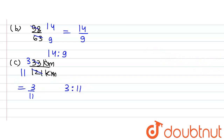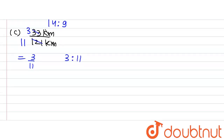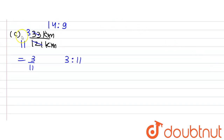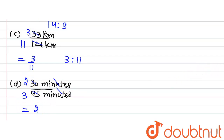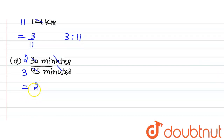Now let's move to Part D. Part D says 30 minutes to 45 minutes. The minutes cancel out. Dividing by 15: 15 multiplied by 2 is 30, and 15 multiplied by 3 is 45. This equals 2 divided by 3, and the ratio is 2 ratio 3.